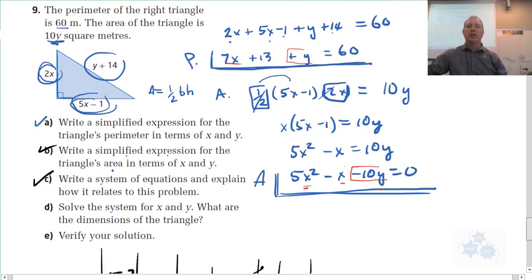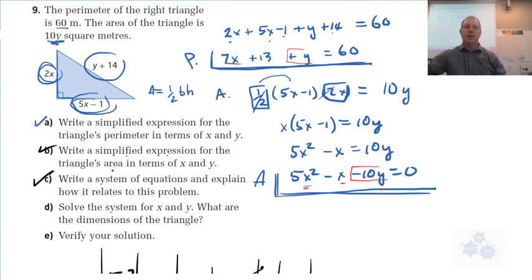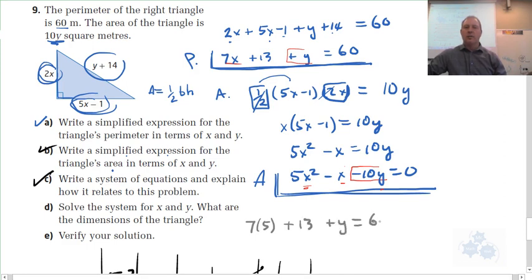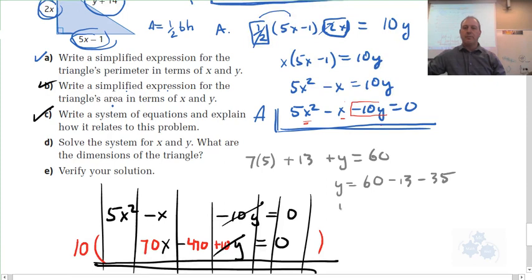So, I can use one of my equations and I can solve for Y. So, let's use the first equation. Let's do 7 times the X is 5 plus 13 plus Y equals 60 or Y equals 60 minus 13 minus 35. Which is what? 47 is like 12? Does it look like 12? Am I doing that right? 48? Yeah. So, it looks like we have X equals 5 and Y equals 12 for a possible answer.